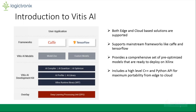Vitis AI is the latest tool framework to implement neural networks in the FPGA using a deep learning processing unit, which makes the implementation of any deep neural network models very easy. Vitis AI supports both edge and cloud-based solutions using Caffe and TensorFlow frameworks. Both of these frameworks are mainstream and highly used in research and deployment environments. Vitis AI also provides a comprehensive set of pre-optimized models ready to be deployed on Xilinx FPGA, and we can use these models as a reference to create our custom models. Vitis AI also includes high-level C++ and Python APIs for maximum portability from edge to cloud-based devices. On the right, you can see the diagram of the top-to-bottom level hierarchy of the Vitis AI library.